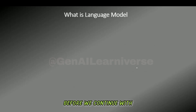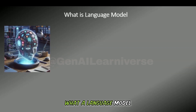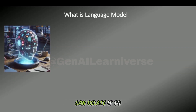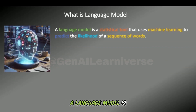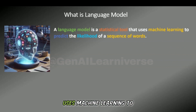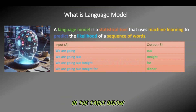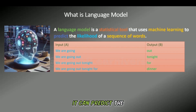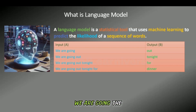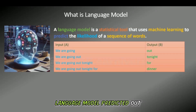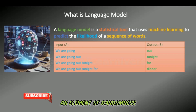Before we continue with the story, let's understand what a language model is and how we can relate it to Blue. A language model is a statistical tool that uses machine learning to predict the likelihood of a sequence of words. As you can see in the table below, when we feed a series of words to a language model, it can predict the next word. For instance, when we input 'we are going,' the language model predicted 'out' using statistics, probability,